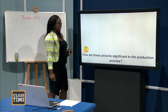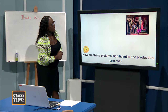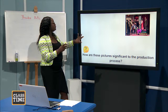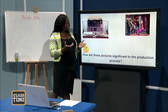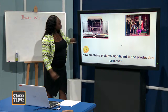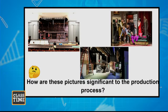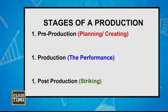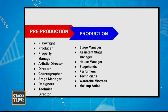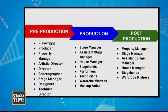Now look at these pictures. One shows a production taking place; another shows them getting ready — the planning stage; and another shows personnel packing up. These three pictures represent the stages of production. In stage one we have planning and creating; in stage two, the production — the actual performance that all of us come to see; and the third is post-production, when we strike the set — taking the set down.